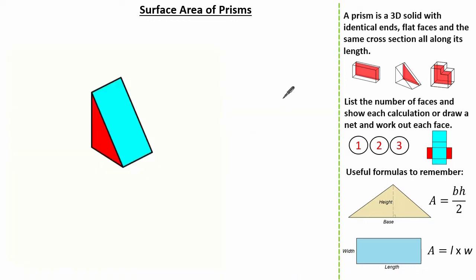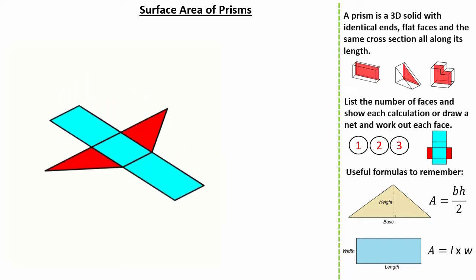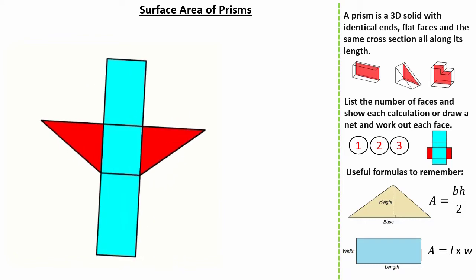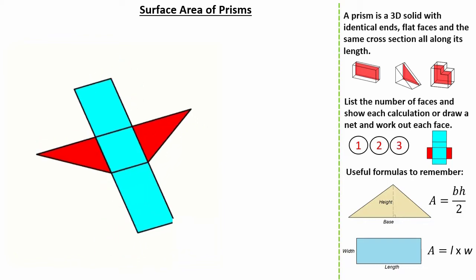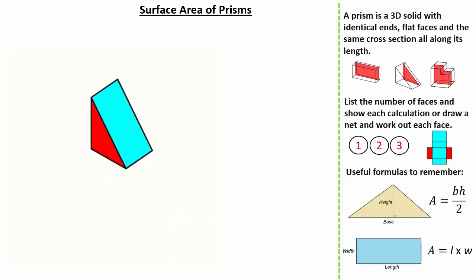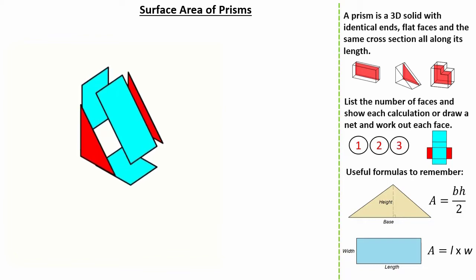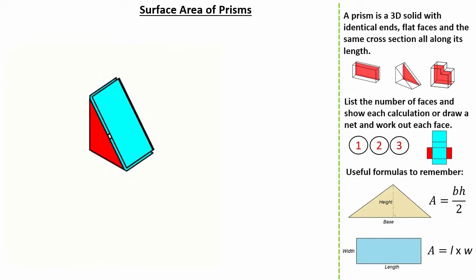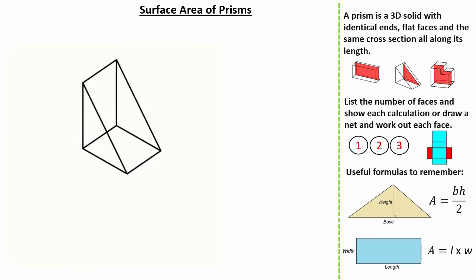Now let's look at a different prism — a triangular prism. It can be quite tricky to see the faces, so let's see it as a net. You can see two triangular faces are the same, and the other rectangular faces can be different. Refolding and exploding the faces shows the triangles and rectangles more clearly. Just like before, let's have a look at a transparent view of our 3D shape to help tackle exam questions.